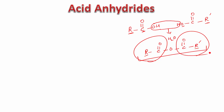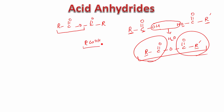How do we name an acid anhydride? If R and R' are the same, it is called a symmetrical anhydride. For a symmetrical anhydride, you figure out to which acid this part corresponds, identify the alka-noic acid name, and instead of writing the word 'acid' you write 'anhydride' after a space. So it becomes 'alka-noic anhydride'.